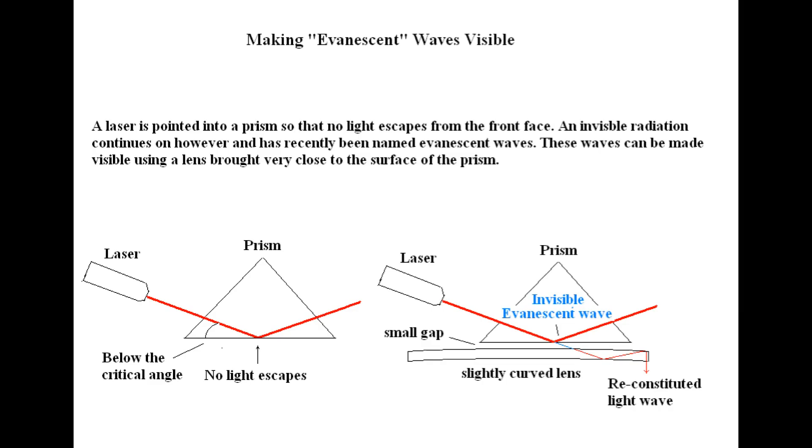A laser is pointed into a prism so that no light escapes from the front face. An invisible radiation continues on, however, and has recently been named evanescent waves.